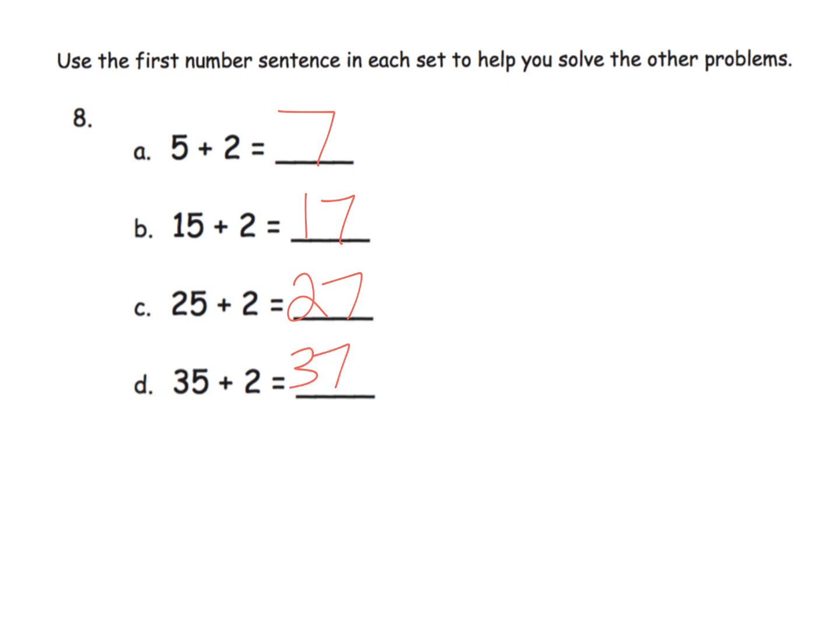Now a lot of us, parents and teachers, we might say, hello, we're adding 2, just count on by 2. 25 plus 2, 25, 26, 27, and we get the answer much quicker. And that is true. Count on is probably more efficient at this point.